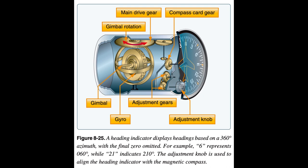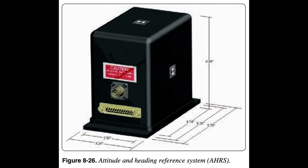Electronic flight displays have replaced free-spinning gyros with solid-state laser systems that are capable of flight at any attitude without tumbling. This capability is the result of the development of the attitude and heading reference system (AHRS). The AHRS sends attitude information to the PFD in order to generate the pitch and bank information of the attitude indicator. The heading information is derived from a magnetometer that senses the Earth's lines of magnetic flux, which is then processed and sent to the PFD to generate the heading display.